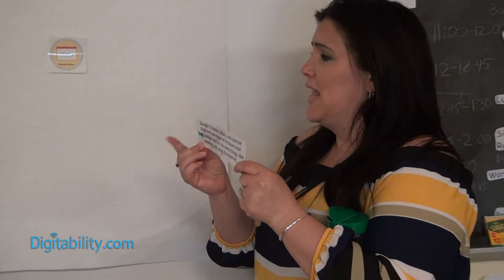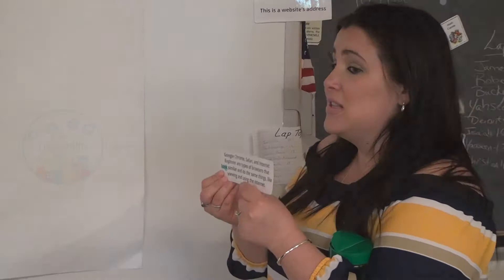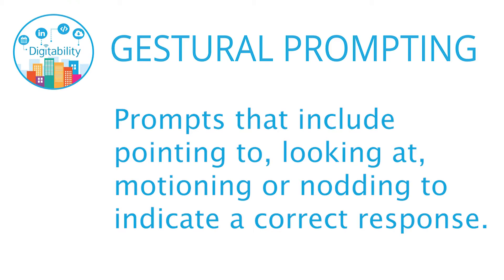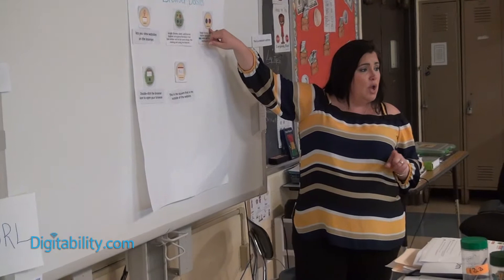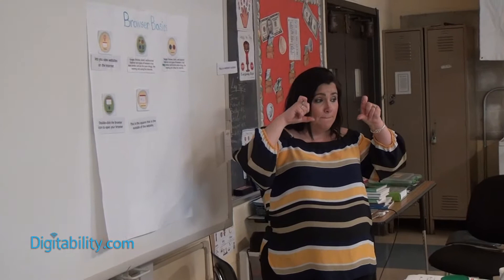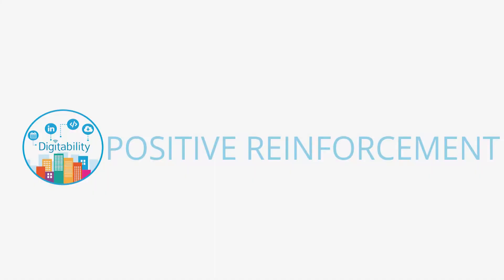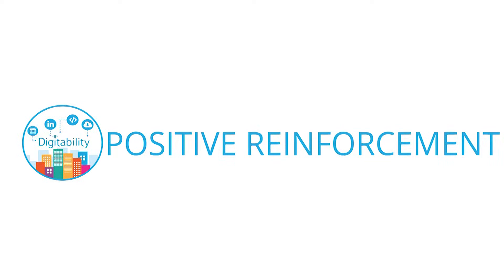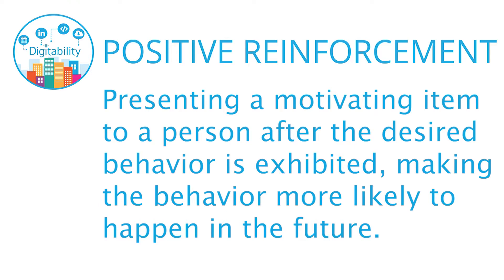The second type of prompt is the gestural prompt. A gestural prompt includes pointing to, looking at, motioning, or nodding to indicate a correct response. Dawn uses gestural prompting to help the entire class follow along and participate, connecting symbols to cue students to the knowledge of the task. Throughout the entire lesson, Dawn uses positive reinforcement — presenting a motivating item after the desired behavior is exhibited, making the behavior more likely to happen in the future.